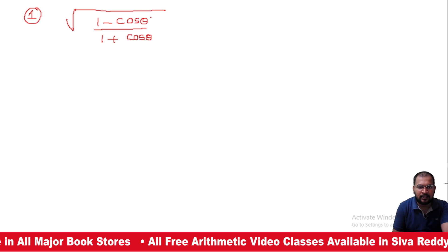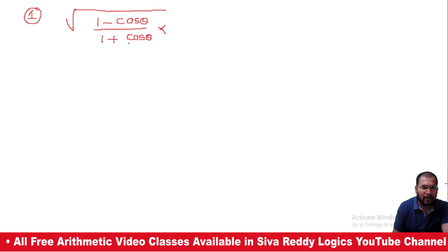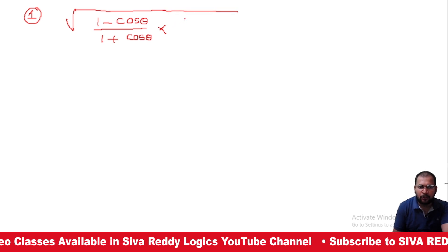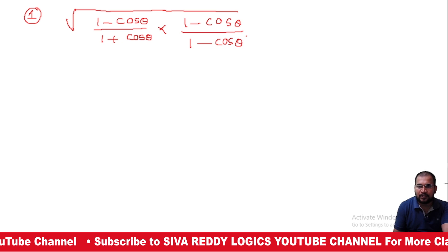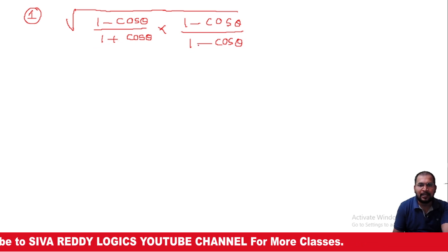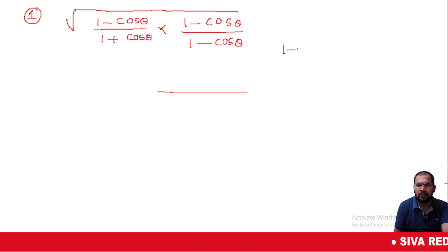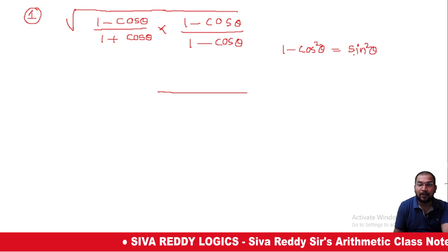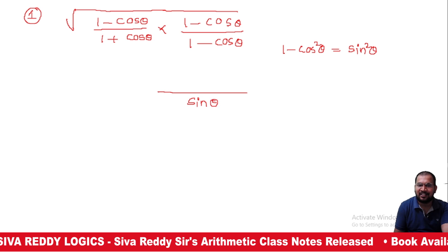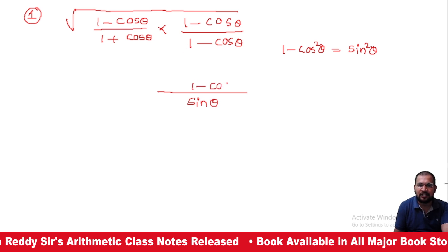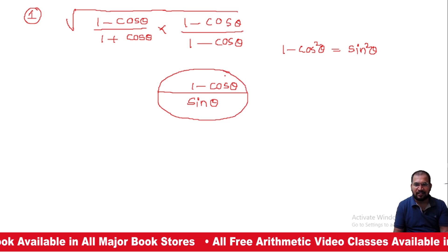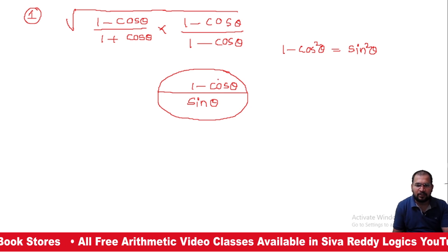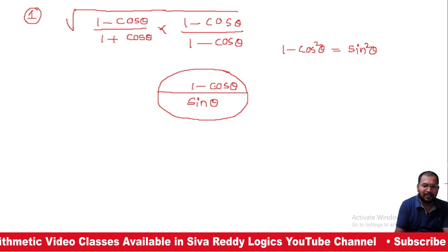Under root of (1 - cosθ) by (1 + cosθ). So, if you have the value, we have 1 - cosθ in the denominator. We can check the options. We will check the 4 options.